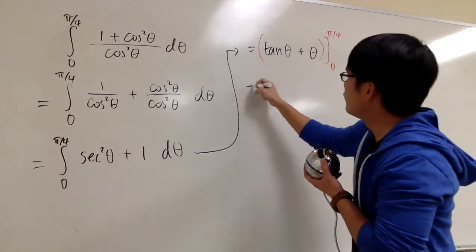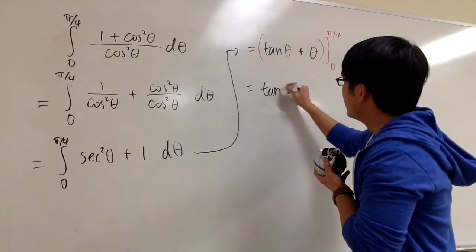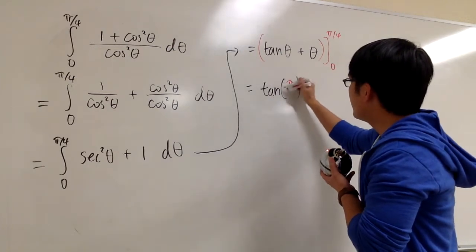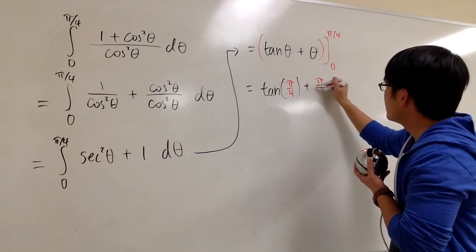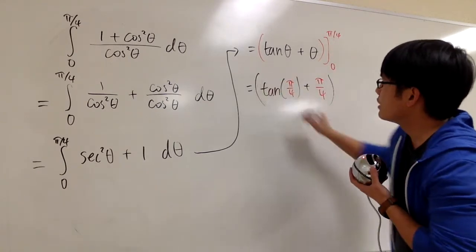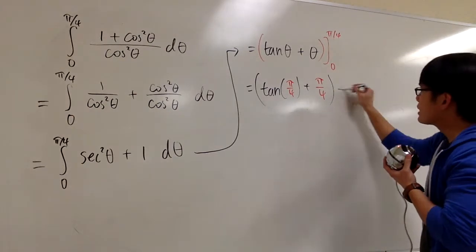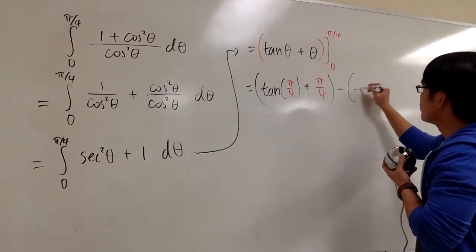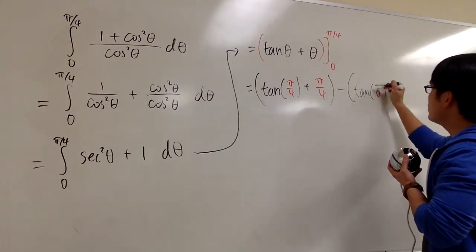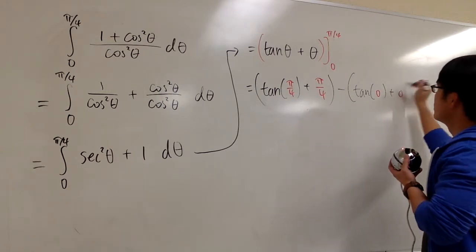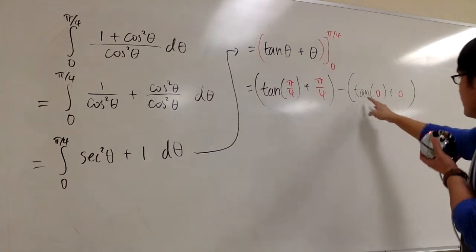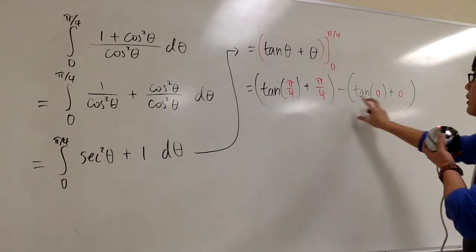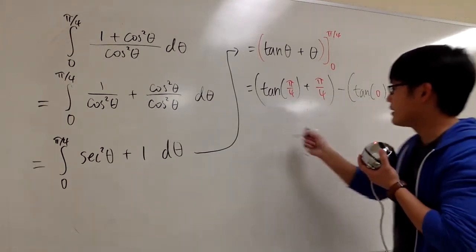So plug in the pi over 4 first. We are looking at this as tangent of pi over 4 plus pi over 4 into theta. Like this. This is the first one. And then we are going to subtract, plug in 0 into all the theta. So we have tangent 0 plus 0. Tangent 0 is 0 plus 0. All this is going to be 0. So that's gone. Doesn't really matter.